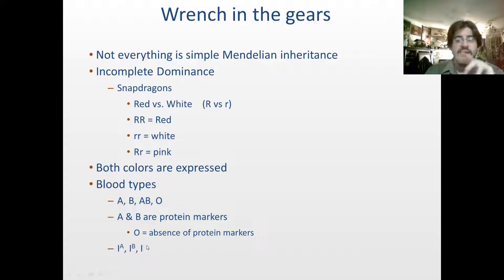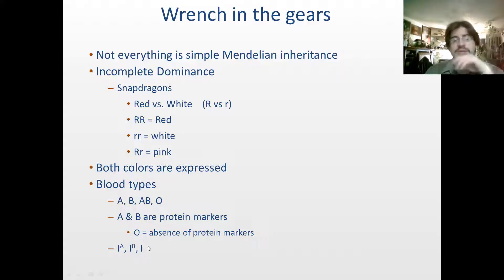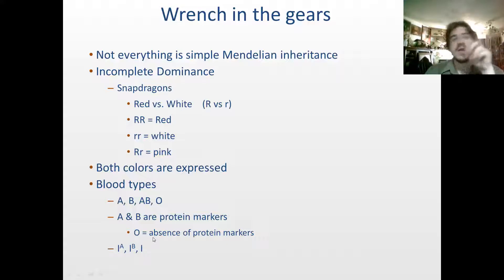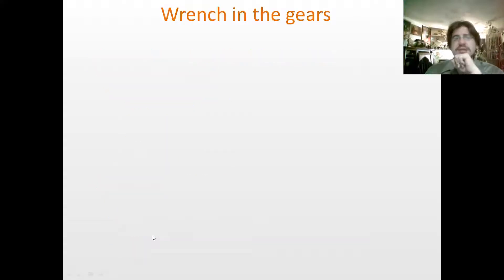And then if you have IO, if you're homozygous for IO, then your red blood cells have zero proteins on them. So that's kind of neat how that works — incomplete dominance, a wrench in the gears.